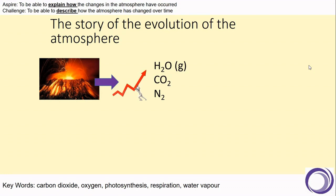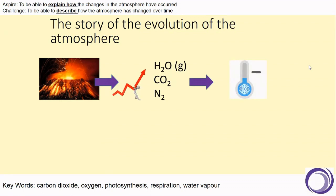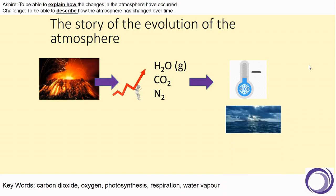Ash clouds would block light from the sun, which would cause a drop in the Earth's temperature. And if that happened, the water vapour would cool and condense. And we think this is what formed the oceans.